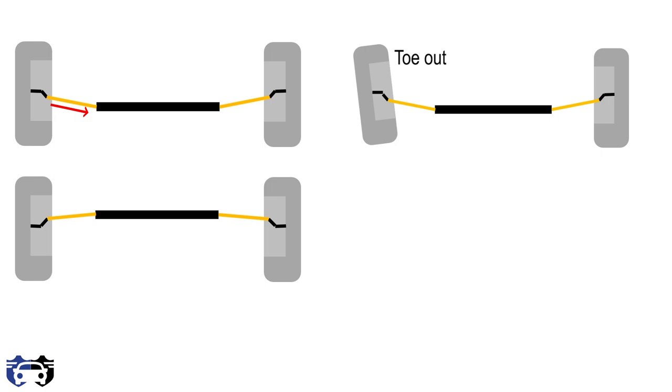Now let's see what affects bump steer. Basically bump steer depends upon four parameters. The first is tie rod angle.